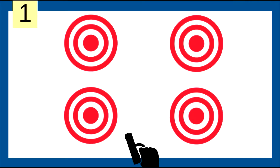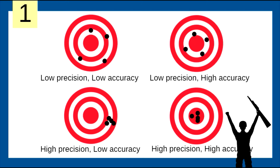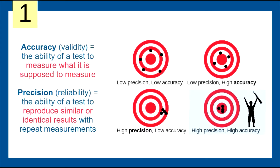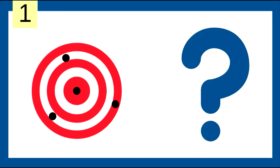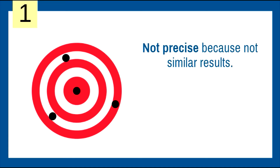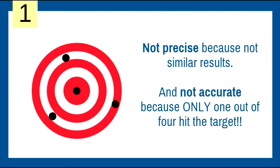Here's our first concept. We have the four different possibilities of precision and accuracy. Accuracy, also known as validity, is the ability of a test to measure what it is supposed to measure. In the top right box, we see a target — low precision because they're not in the same vicinity, but high accuracy because they're all near the bullseye. Neither precise nor accurate when only one out of four hits the target.